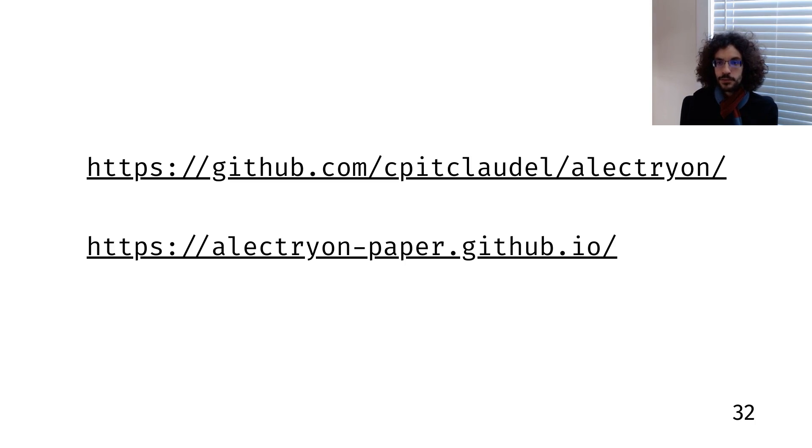Alectryon is freely available on GitHub, and it's already used in the wild. We use it for our group blog, I know someone is trying to use it for their Coq documentation at a company, and there's even third-party packages starting to pop up to integrate it with other blogging platforms. I'm sure someday someone will help me figure out how to put it on OPAM, or maybe on the Python package index.